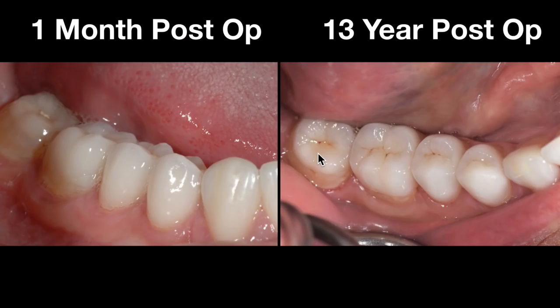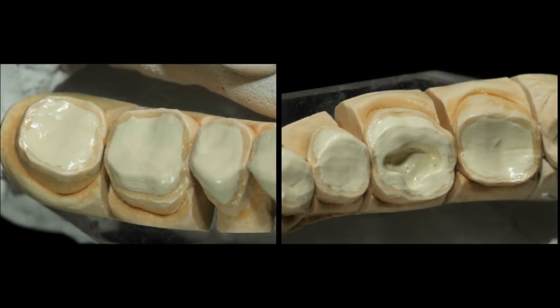On the newer case I'm going to share with you today, I actually used Emax — lithium disilicate — for the molars. I used feldspathic still for the bicuspids and the cuspid veneers on the new case, but I elected to switch to lithium disilicate for the molars. Here are the preparations — the actual die models of the case — and you can see just the preparation design.